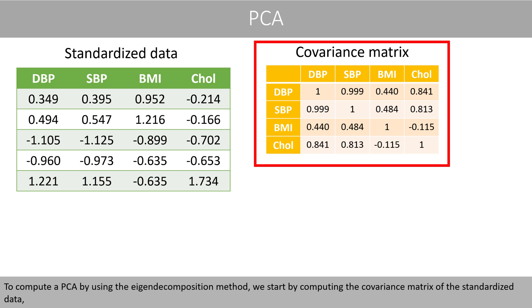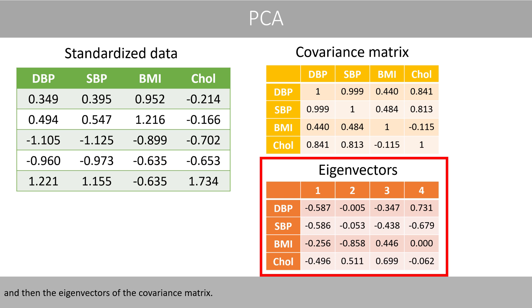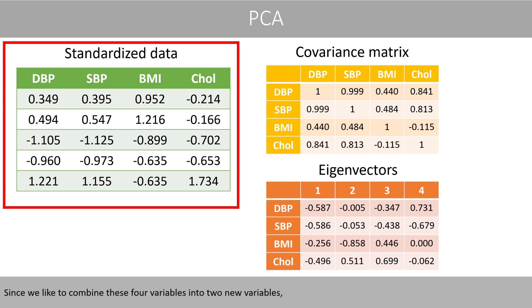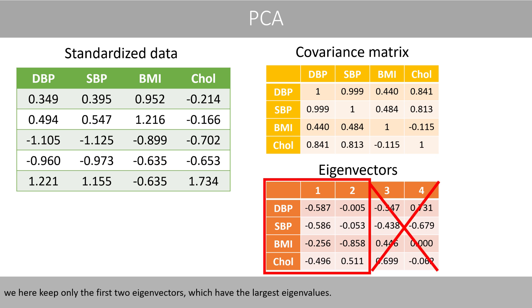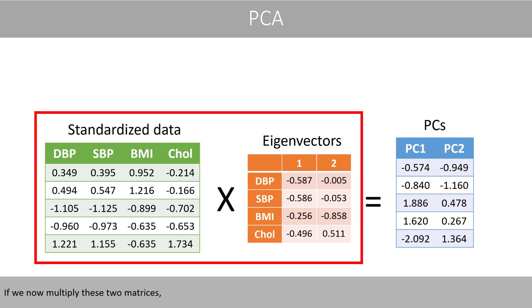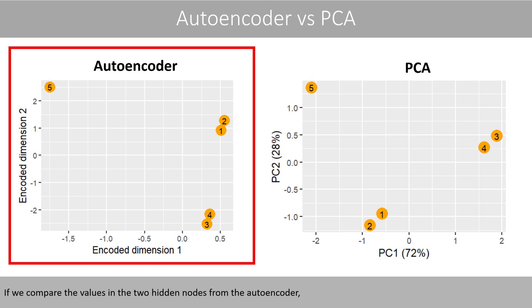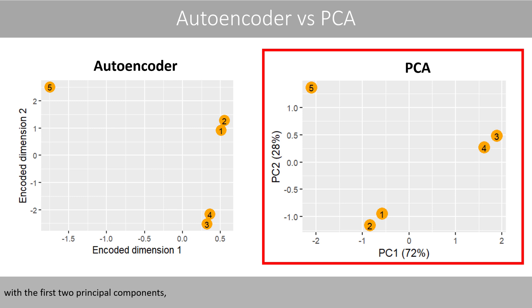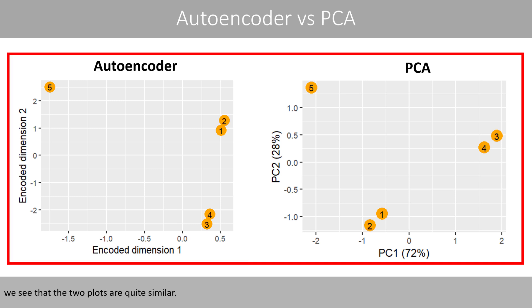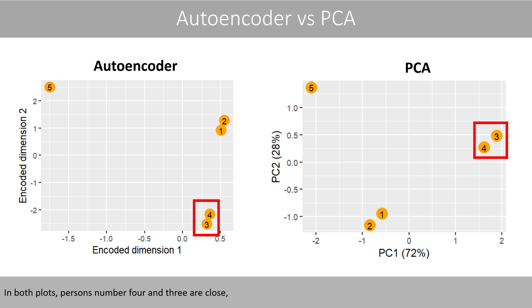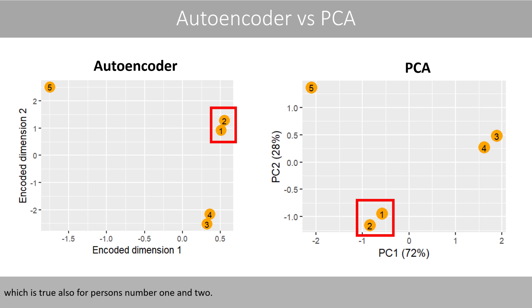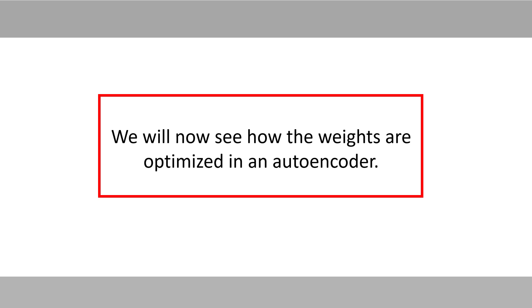This looks a lot like a score plot we get if you perform a principal component analysis. Let's compute a PCA to compare with. To compute the PCA by using the eigendecomposition method, we start by computing the covariance matrix of the standardized data, and then the eigenvectors of the covariance matrix. Since we like to combine these four variables into two new variables, we here keep only the first two eigenvectors, which have the largest eigenvalues. If we now multiply these two matrices, we'll get the principal component scores, which can be plotted like this. If we compare the values in the two hidden nodes from the autoencoder with the first two principal components, we see that the two plots are quite similar. In both plots, persons number four and three are close, which is true also for persons number one and two.